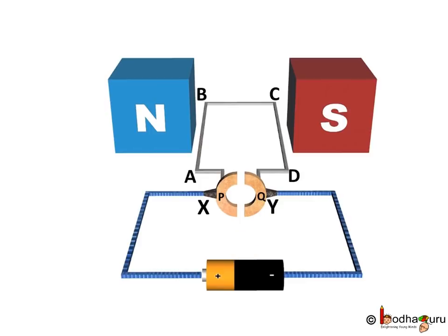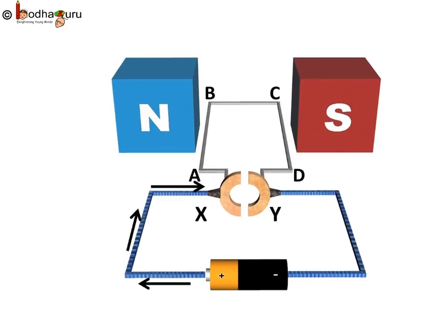So, what is the flow of current in the coil? The current in the coil ABCD enters from the source battery through the conducting brush X and it flows back to the battery through the brush Y after flowing through the coil ABCD.